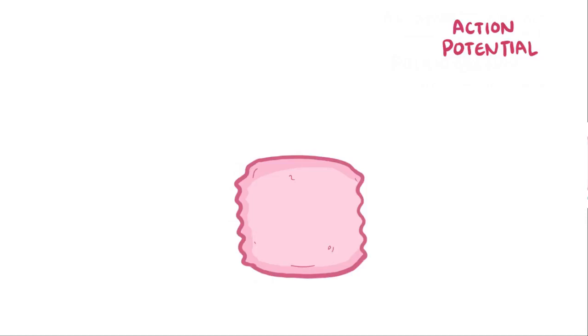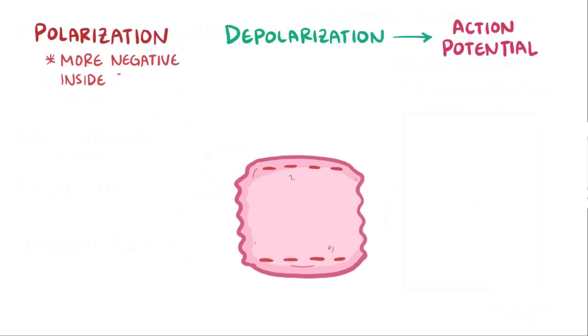Now let's take a closer look at the chemistry that gets the action potential moving. Action potentials are initiated by depolarization, which is the opposite of polarization. Polarization is when there's a higher negative charge inside the cell relative to outside the cell, and that difference in charge is called the membrane potential.